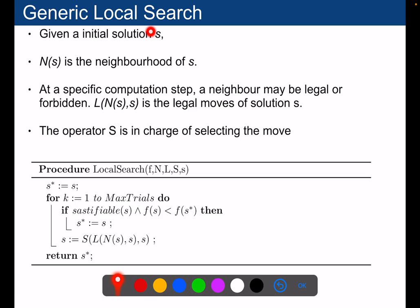This is the generic pseudocode for local search. Given an initial solution S, given in parameter of this procedure, N of S will be the neighborhood that you will explore around the solution S. Then, at the specific computation step, some of the moves might be legal or might be forbidden, and this set of moves in the neighborhood will be filtered by the operator L. These are the legal moves.